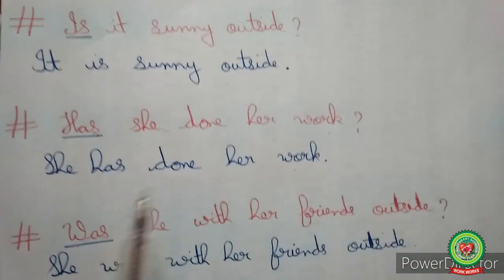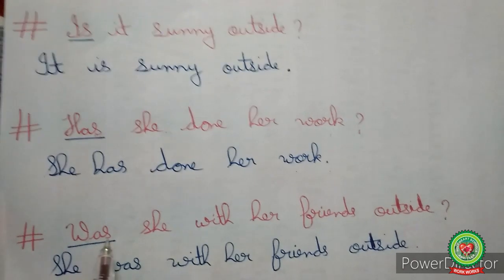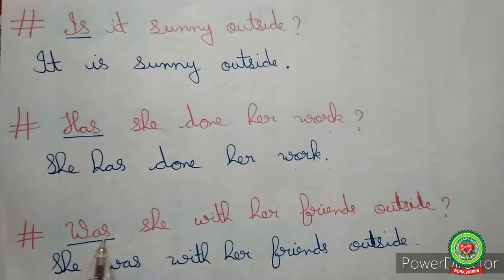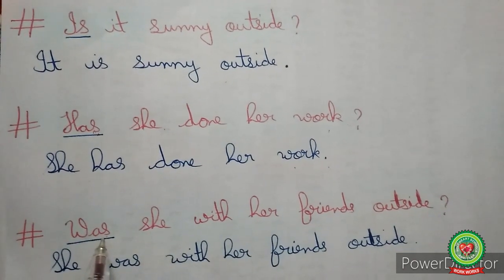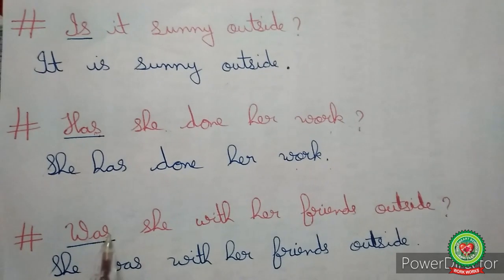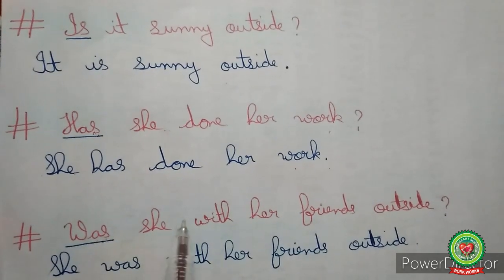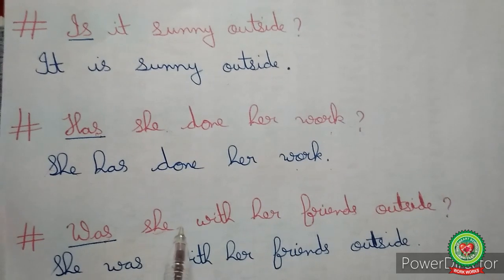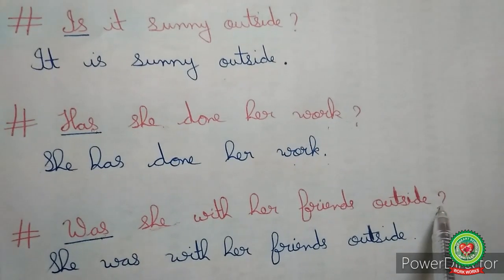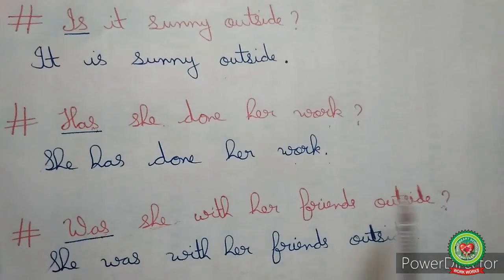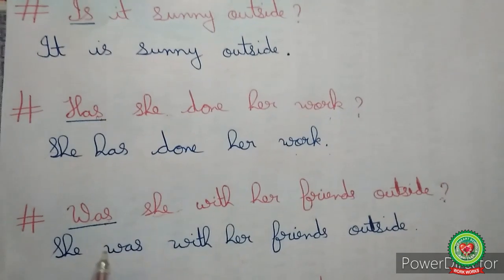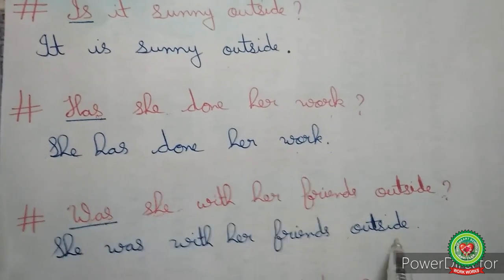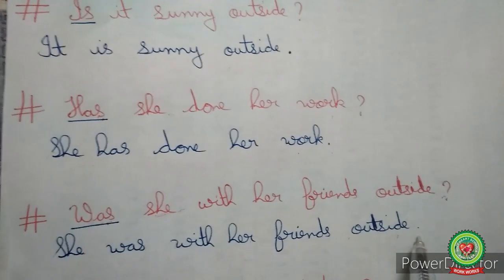Look at one more example: 'Was she with her friends outside?' Here 'was' is the helping verb placed in the beginning. We will place 'was' after the subject 'she' and replace the question mark with a full stop. The statement will be: 'She was with her friends outside.'